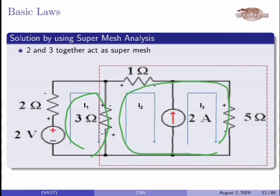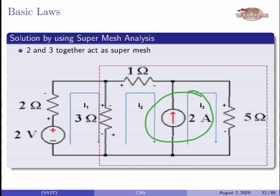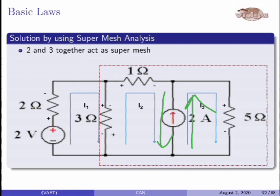Mesh 2 and mesh 3 are considered together as a super mesh, as shown in the box. We write the KVL equation for this super mesh - that is, for the closed path which includes both meshes. We write the KVL equation for mesh 1, and the next KVL equation is for the super mesh. This gives two equations for three variables, so we need a third equation. That third equation is obtained from the branch containing the current source: I3 is flowing from bottom to top and I2 is flowing from top to bottom, so I3 minus I2 equals 2 ampere.